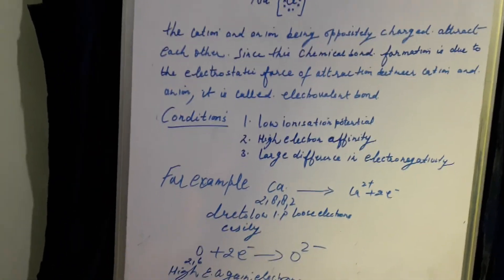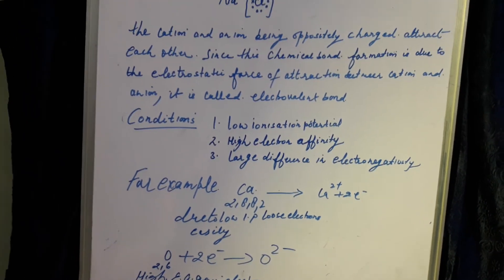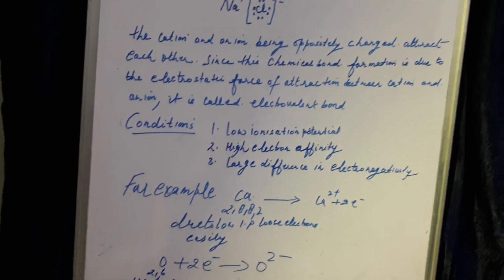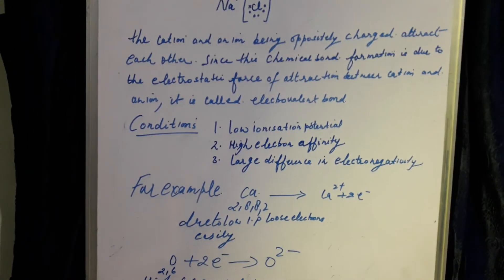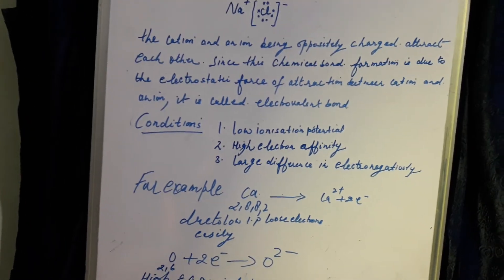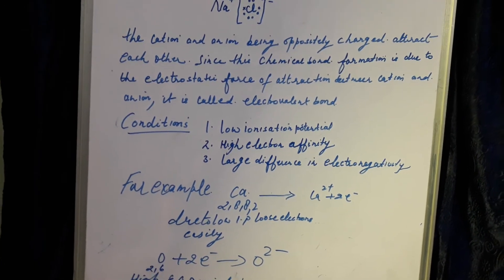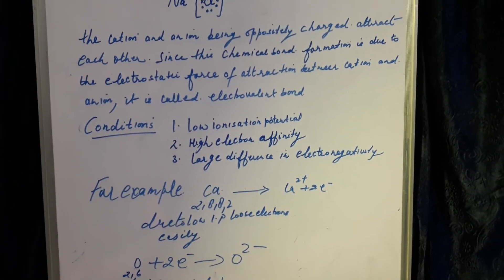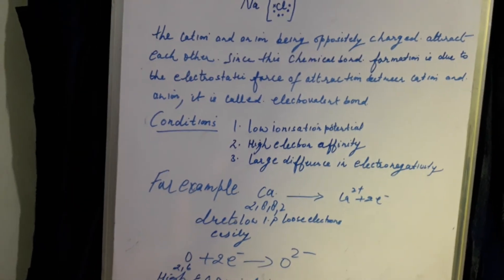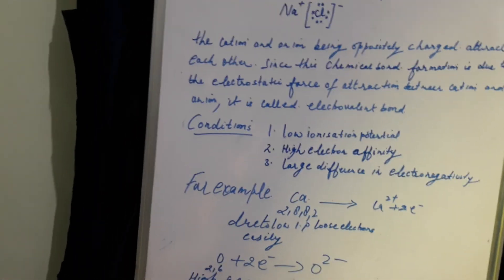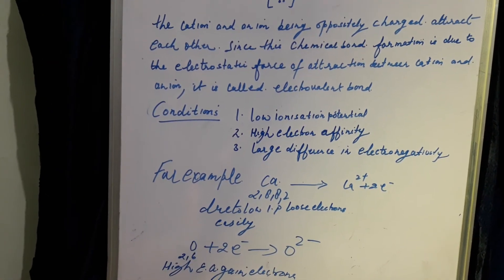So the characteristics to remember: first, all electrovalent compounds are crystalline solids; second, they are water soluble; third, they are good conductors of electricity — but not in the solid state, because in solid state the ions are not free and are held together by very strong electrostatic forces. They conduct electricity only in aqueous state or in molten state, because in those states the ions are free.